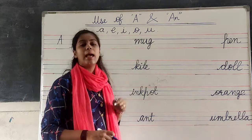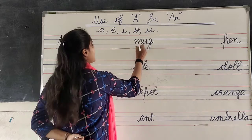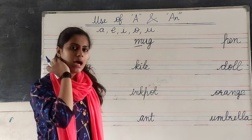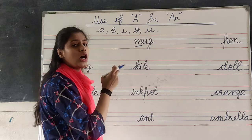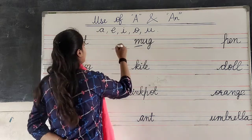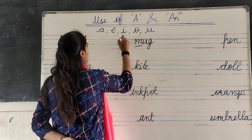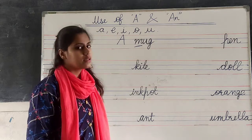Mug. First letter, M. So, what we have to write? A or An? A. Very good. Because, it is not a vowel. Correct?